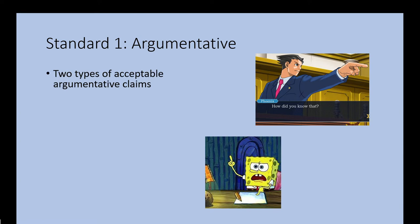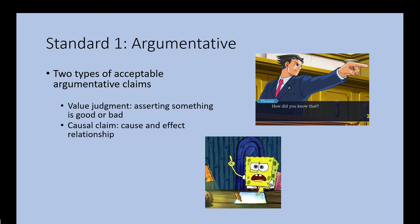There are two types of acceptable argumentative claims in my class. I highly suggest that you focus on the first one, and if you want to get fancy, you can go to the second one. The first one is a value judgment — asserting something is good or bad. The second type is a causal claim — asserting that one thing causes another.